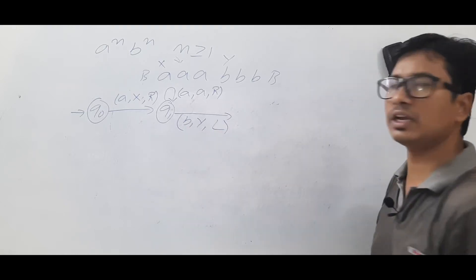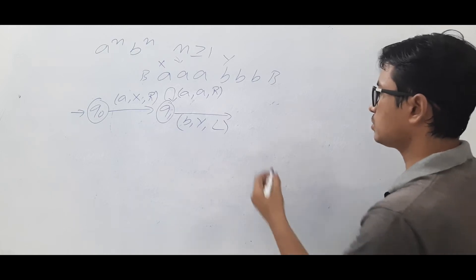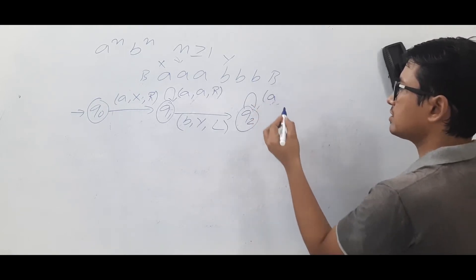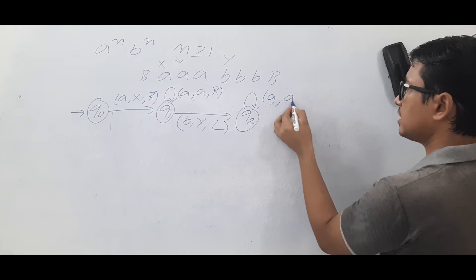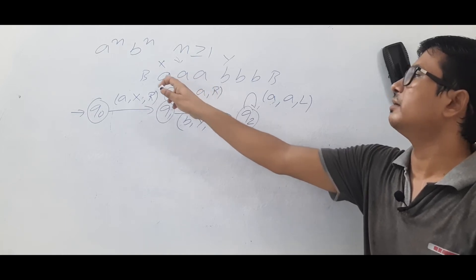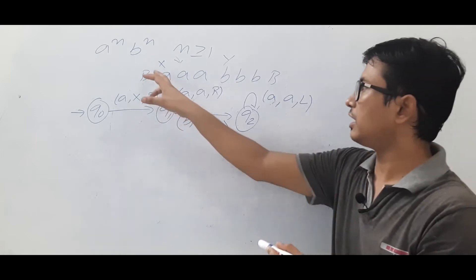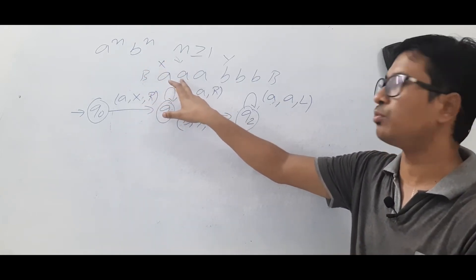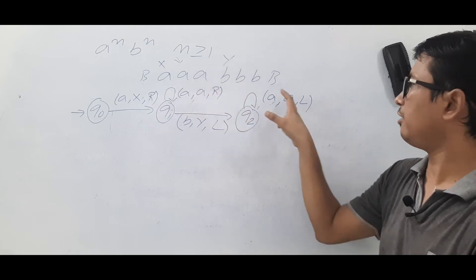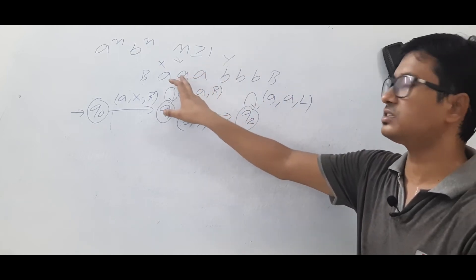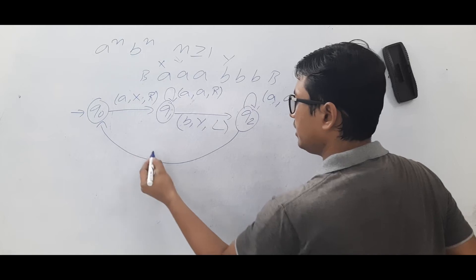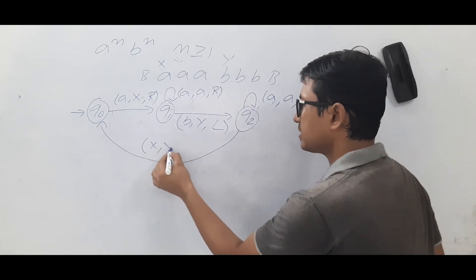After marking a B as Y and moving left, we may encounter A's — we keep them as A and continue moving left. We are looking for the X marker. Once we find X, we keep it as X and move right, positioning ourselves to mark the next A.